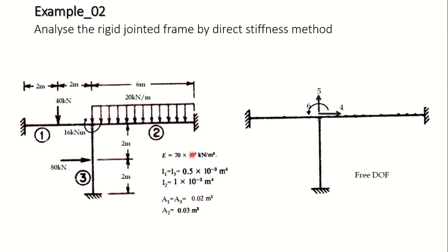We have the properties listed for different members. E value is given as 17 × 10⁶ kN/m². I₁ and I₃ are 0.5 × 10⁻³ m⁴, and I₂ is 1 × 10⁻³ m⁴. Also, A₁ and A₃ are 0.02 m² and A₂ is 0.03 m². These are for member number 1, member number 2, and member number 3 accordingly.